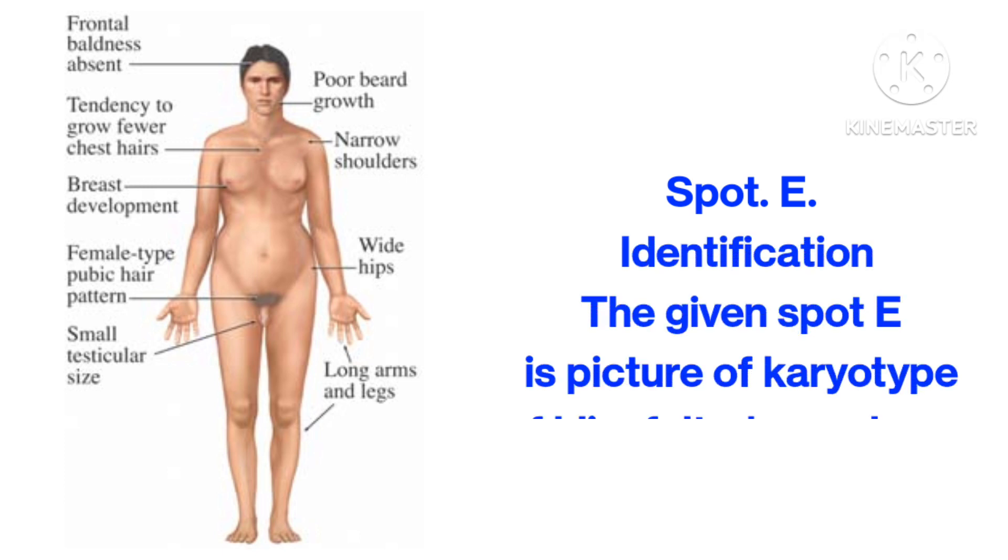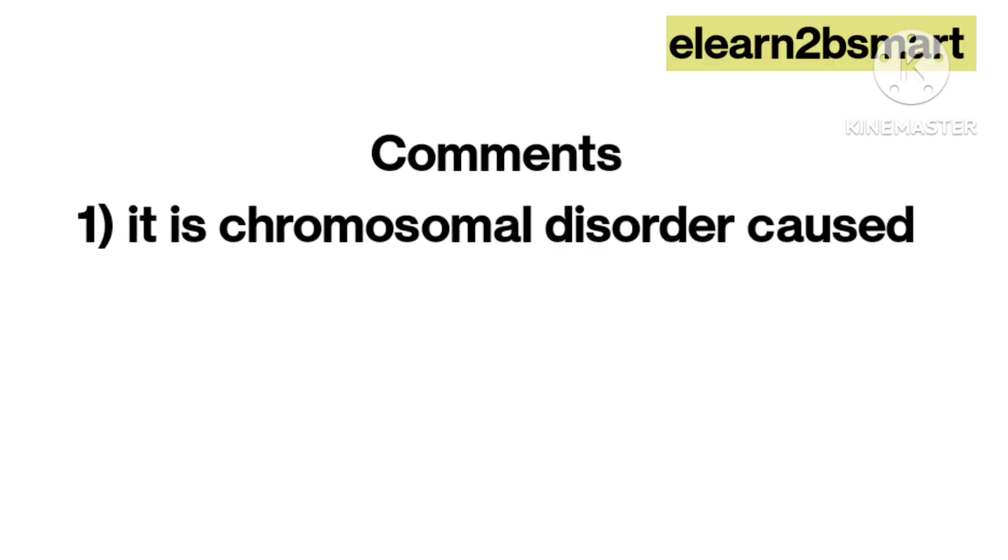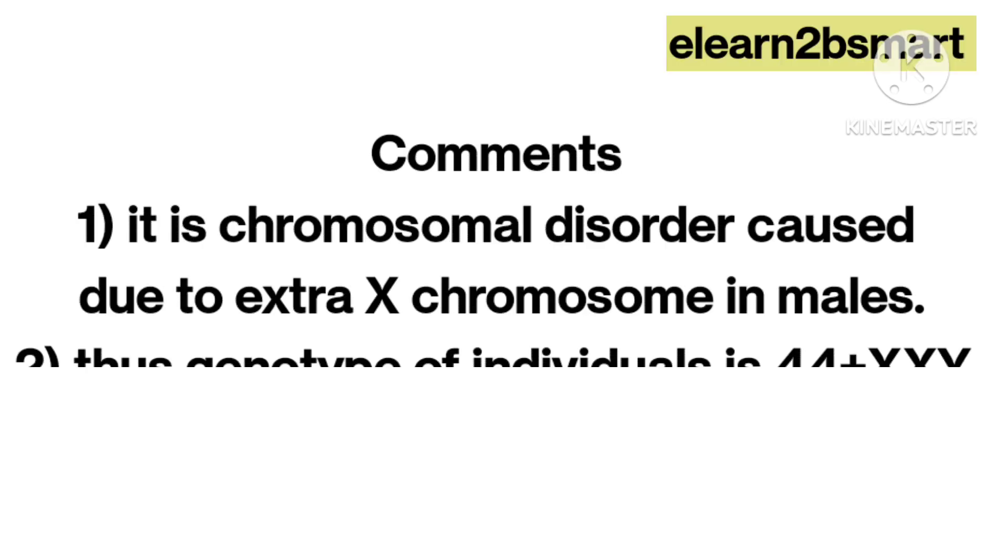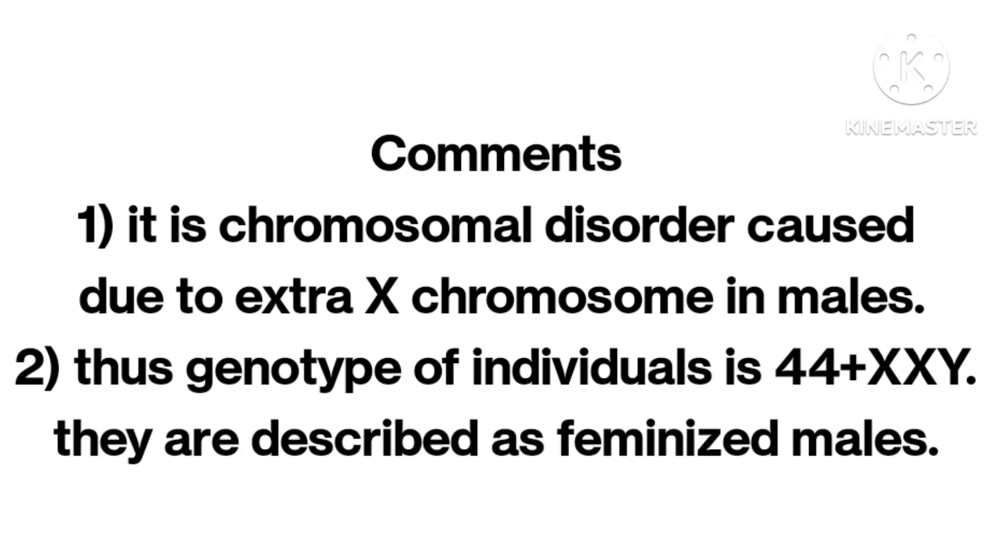Spot E. Identification: The given spot E is picture of karyotype of Klinefelter syndrome. Comments: It is a chromosomal disorder caused due to extra X chromosome in males. Thus, genotype of individuals is 44 plus XXY. They are described as feminized males.